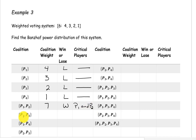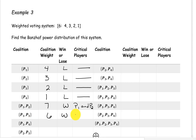The coalition with players 1 and 3 has a weight of 4 plus 2, or 6. It's a winning coalition that just meets the quota of 6, so removing either player causes it to lose. Both player 1 and player 3 are critical.